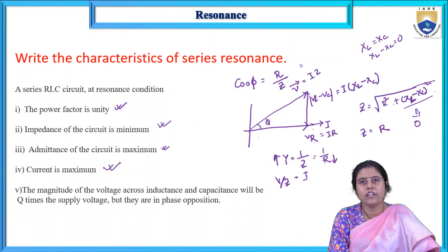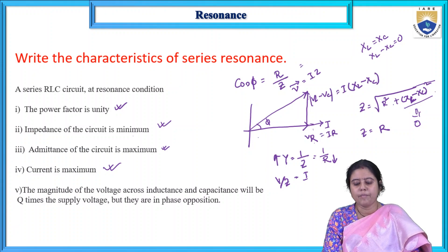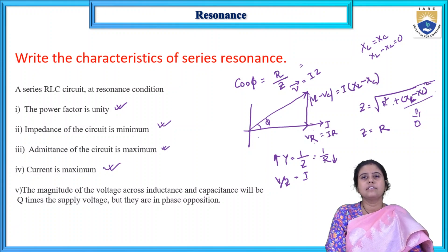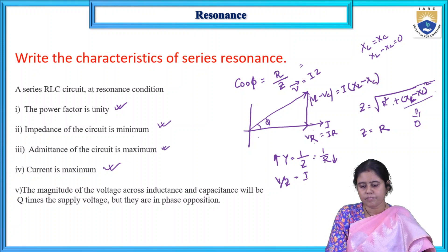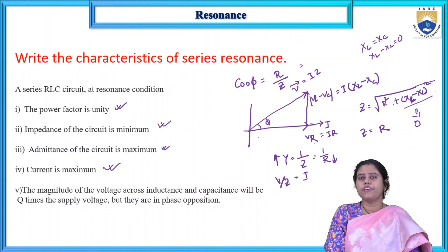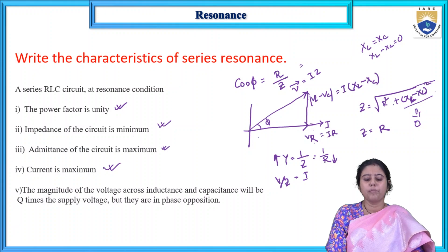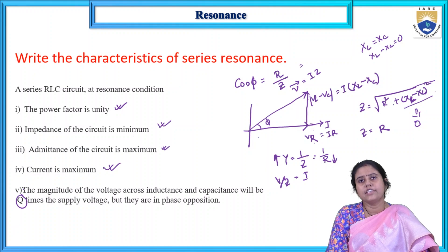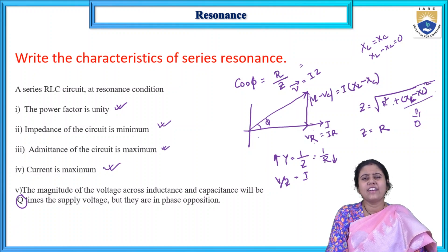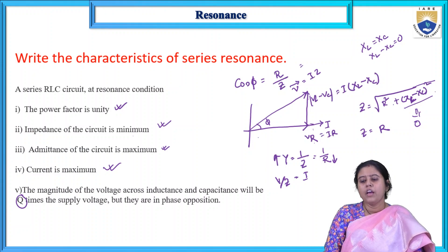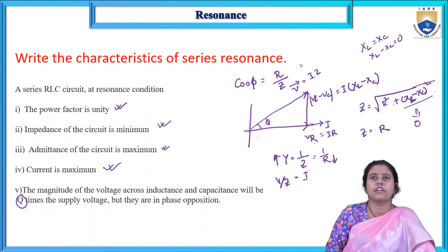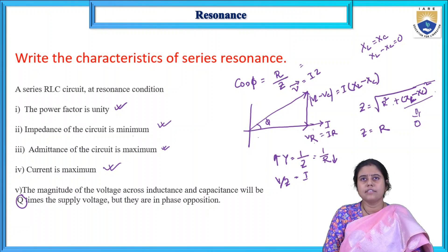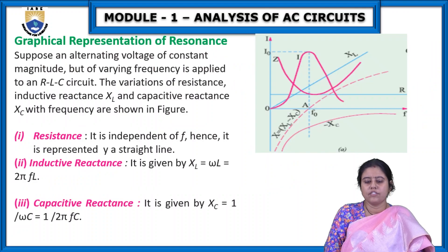The magnitude of the voltage across the inductance and capacitance will be Q times the supply value. But they are in phase opposition — always exactly 180 degrees apart with the same magnitude. Q is known as the quality factor. What is resonance and what are the characteristics of series resonance? These are very important questions.